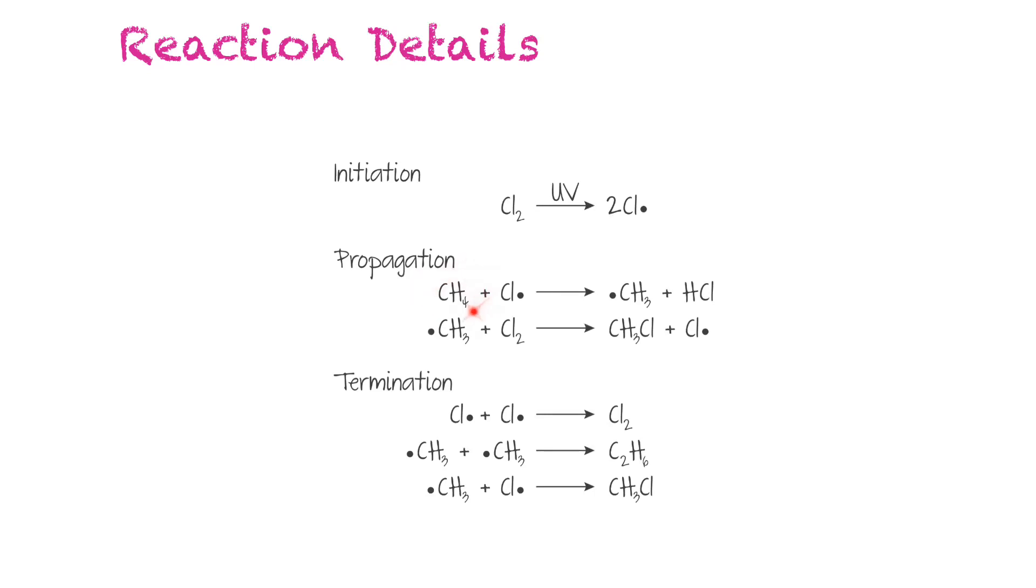So in this example, we have methane bumping into one of those chloride radicals. And then you get a methyl radical and hydrogen chloride. And then the methyl radical will react with a chlorine molecule and create methyl chloride and a chloride radical.